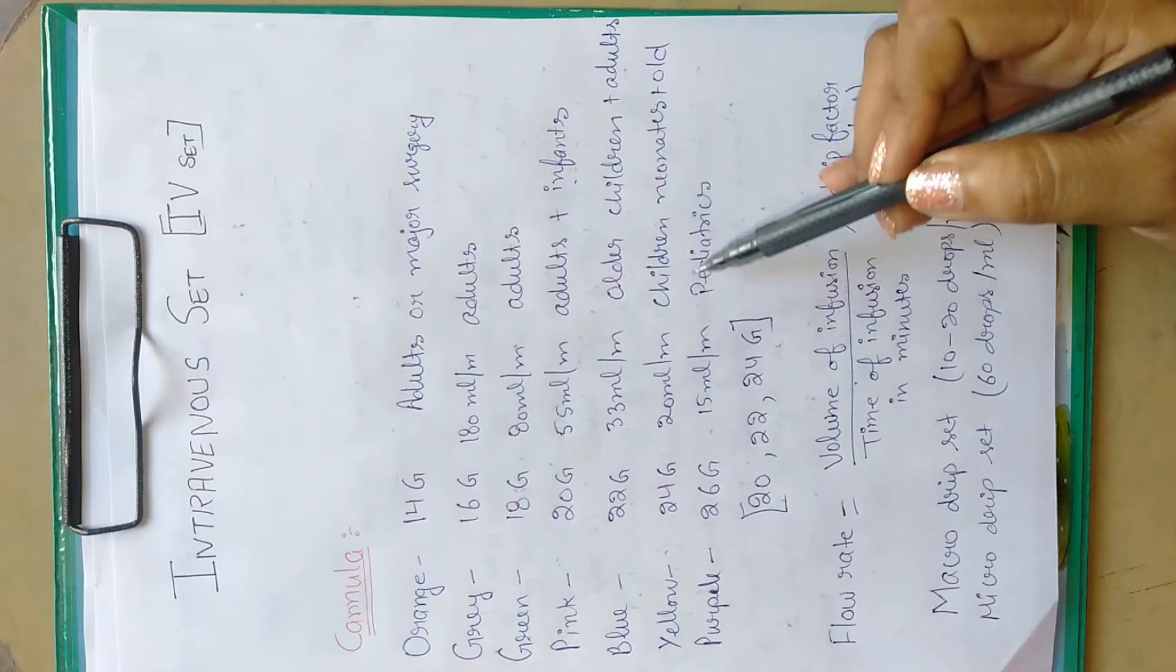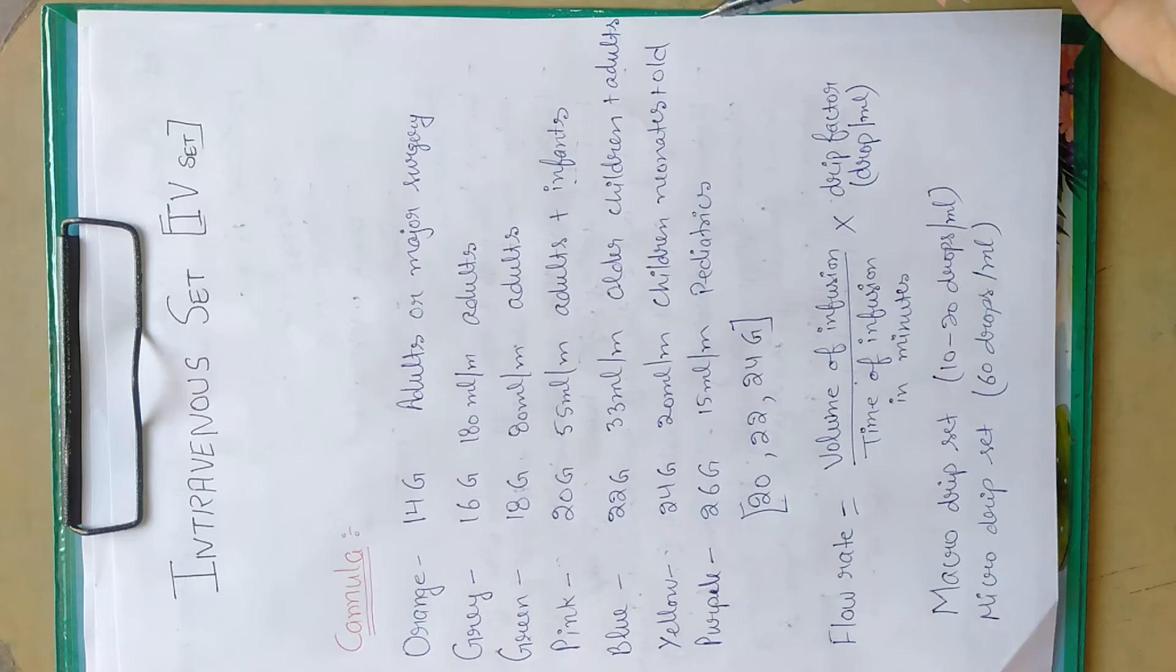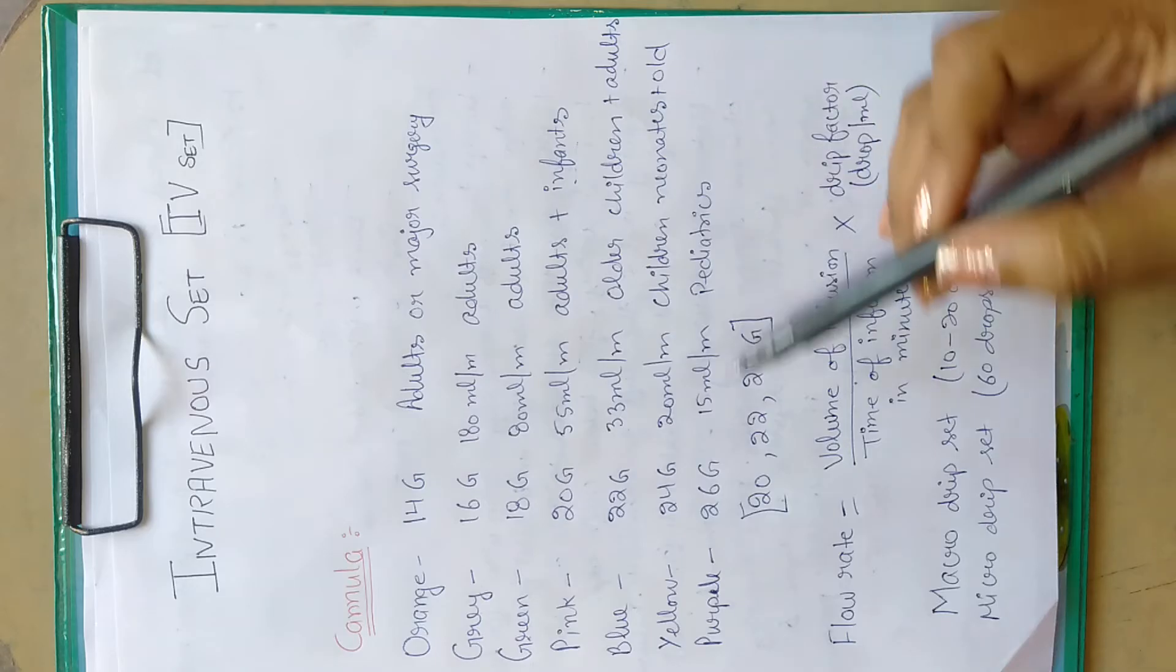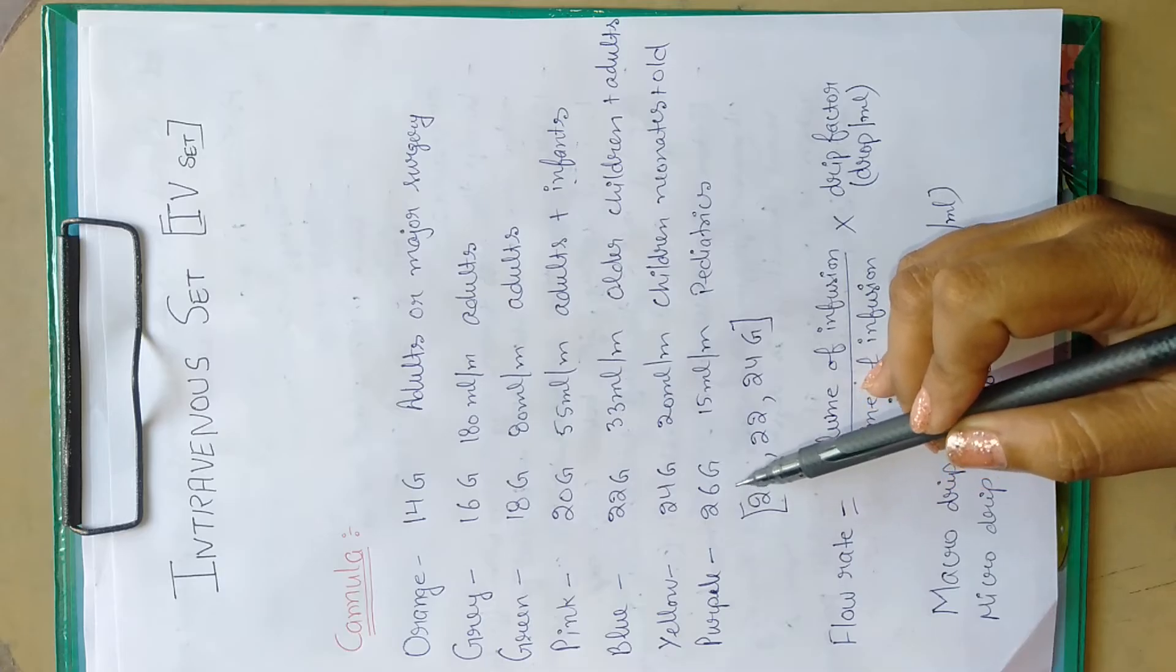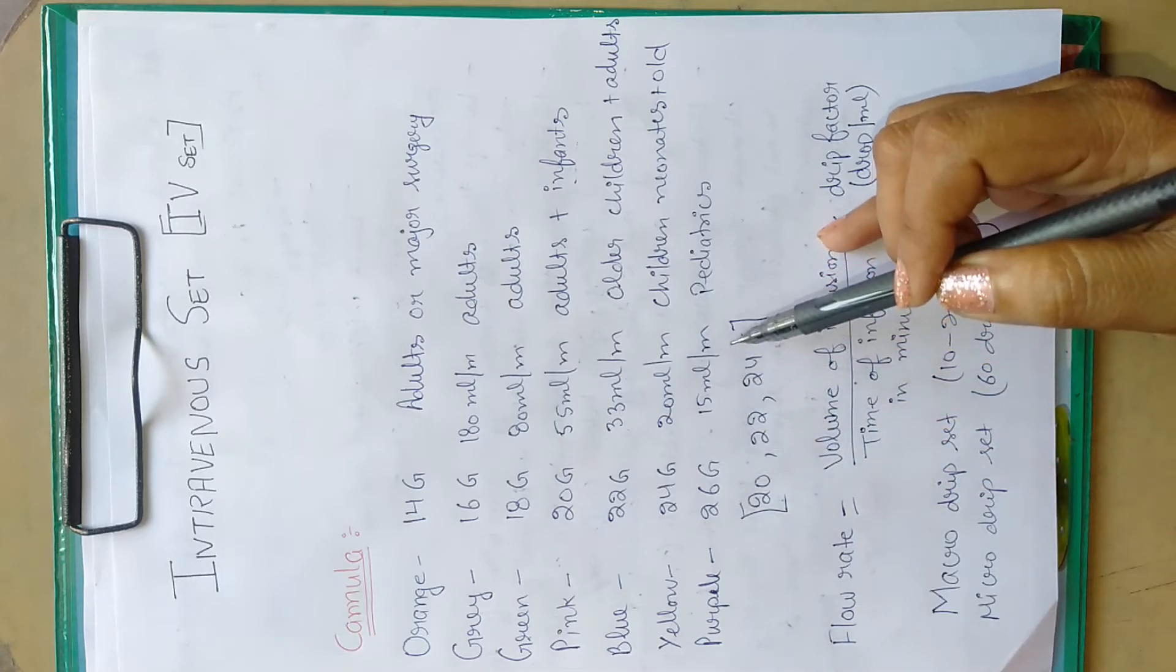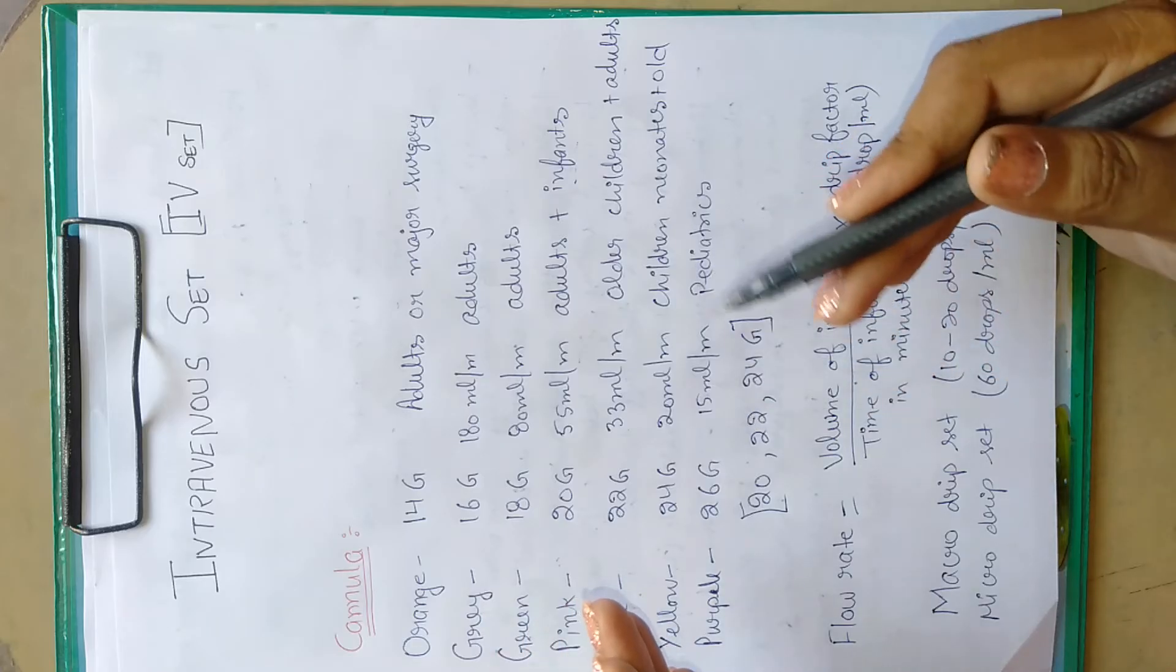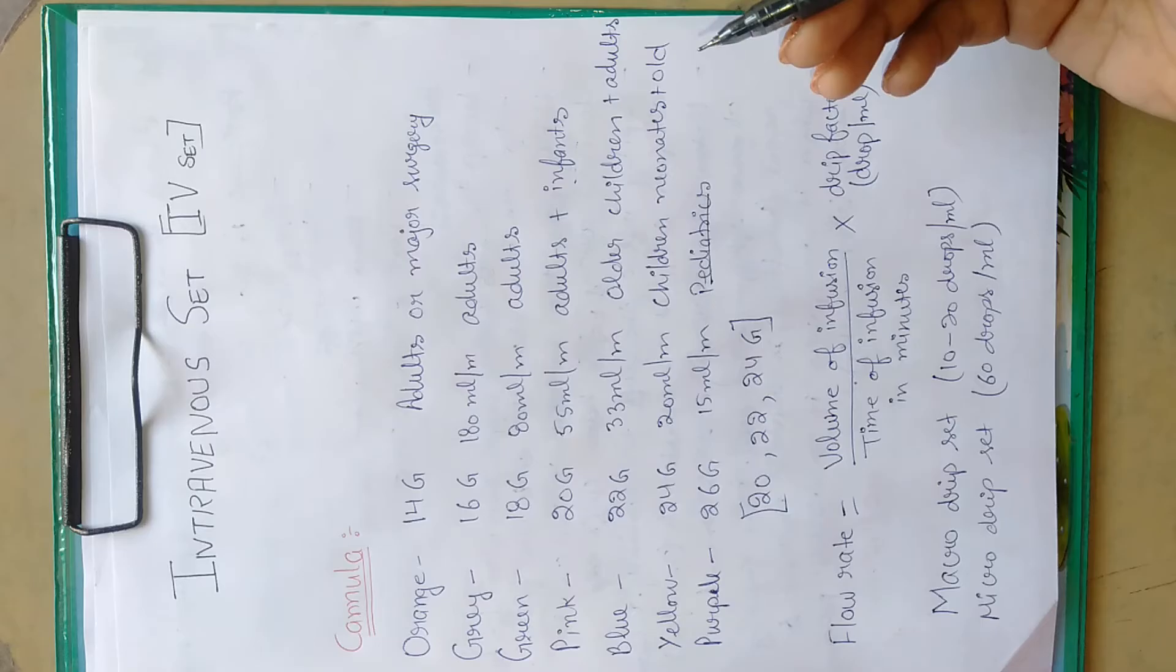Blue colored cannula of 22 gauge with approximately 20-36 ml per minute is used for children, neonates, and older adults. Next one is purple cannula of 26 gauge with flow rate of 50 ml per minute, used for pediatrics, neonates, and infants.